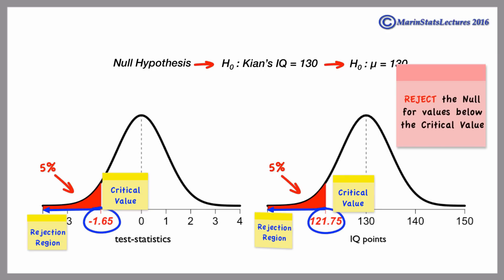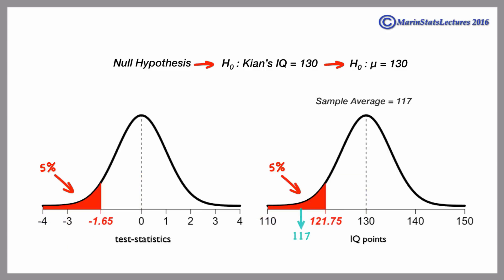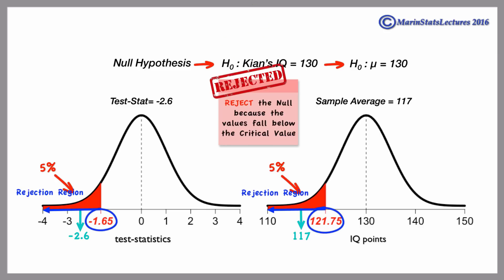For values below those, we will reject our null hypothesis. In our example, the sample average is 117 and the test statistic is negative 2.6, and these fall below the critical values into the rejection region, and so we will reject the null hypothesis.